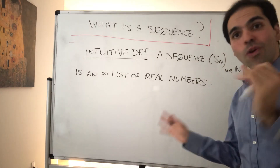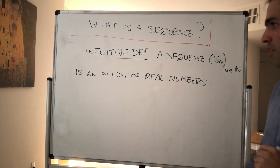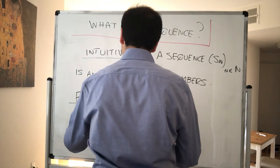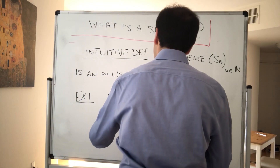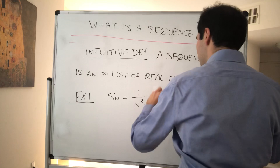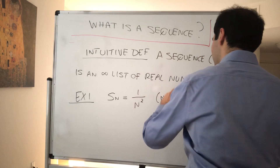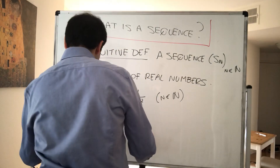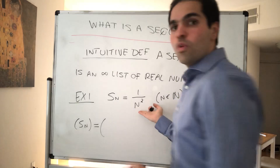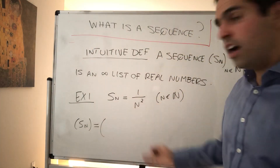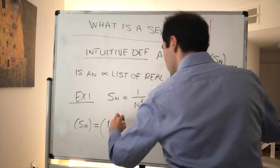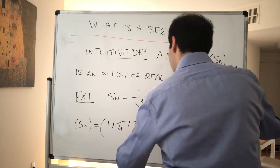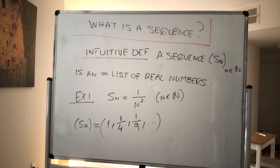Today I'm going to go through a couple of examples of sequences. For instance, consider the sequence Sn = 1/n², where n is in ℕ. Then the sequence is simply 1/1² which is 1, 1/2² which is 1/4, 1/3² which is 1/9, and so on.